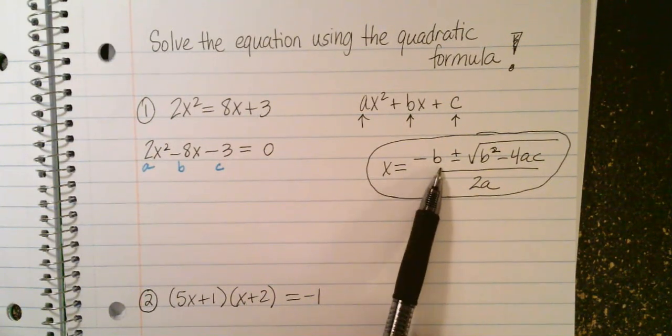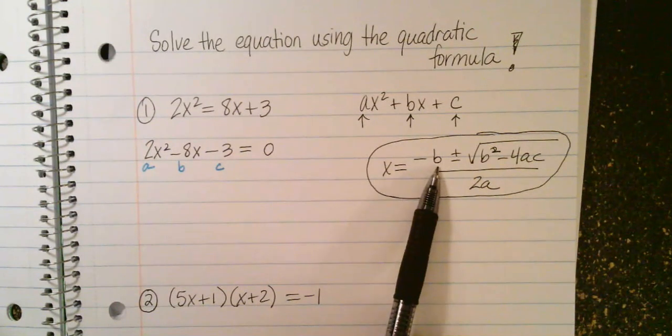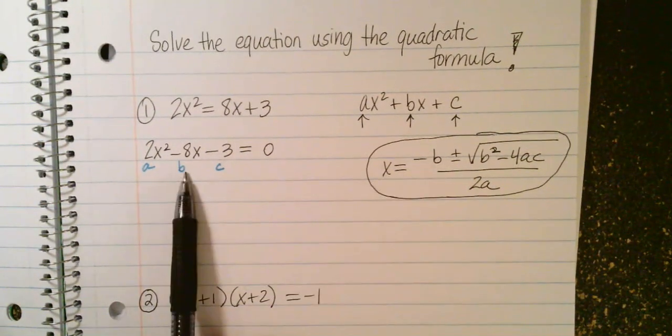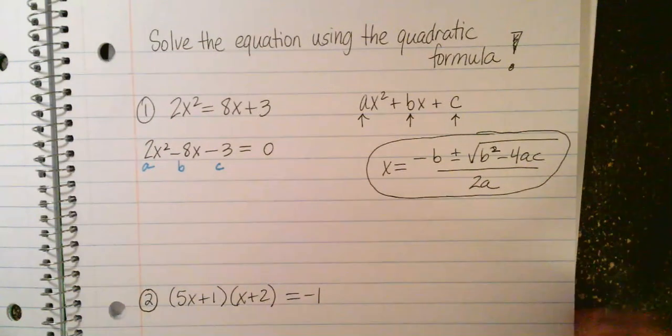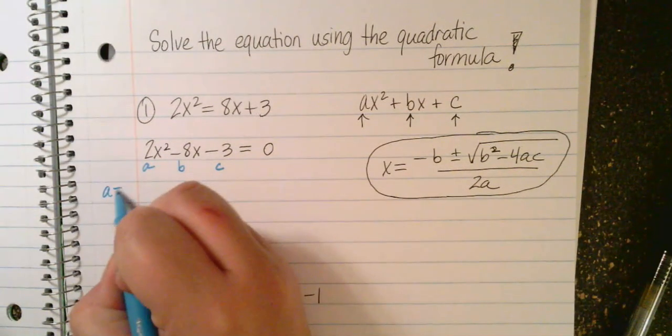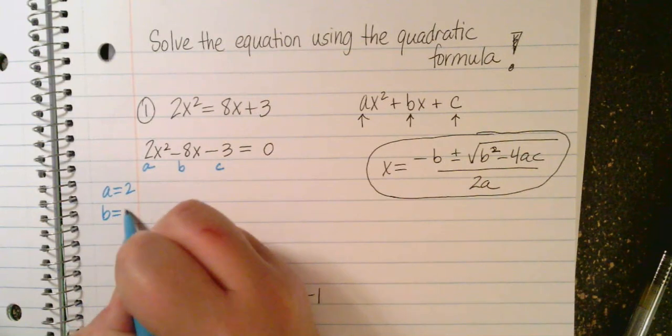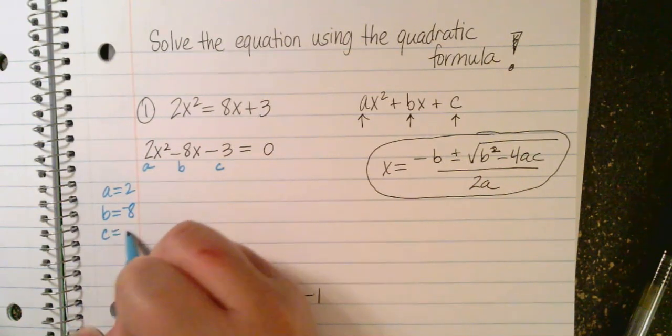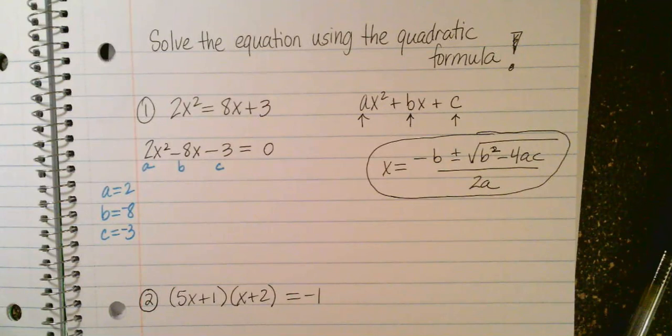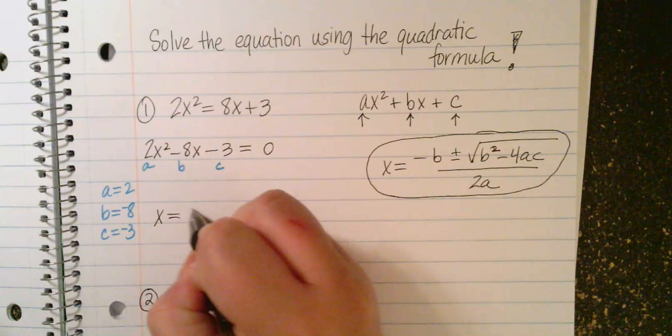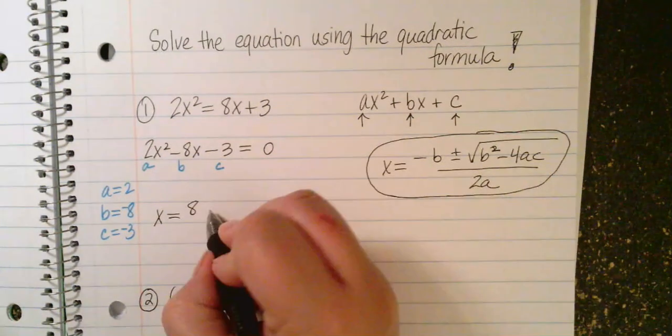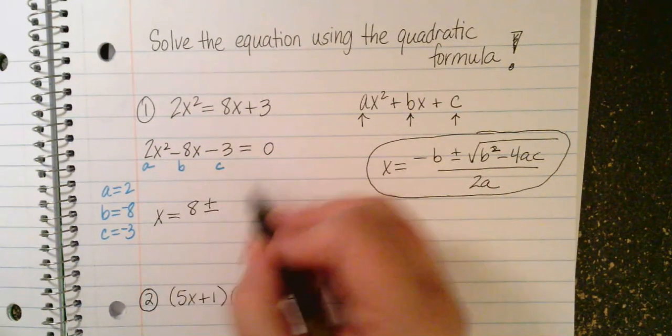A couple of things to be careful of. This says the opposite of B. It doesn't mean that it's going to be negative. It means it's going to be the opposite of whatever B is. My B here is already negative. My B is negative 8. So when I do the opposite of B, I'm going to write positive 8. Let me go ahead and write along the side here. A is 2. B is negative 8. And C is negative 3. So when I plug in and do the opposite of B, that's going to be a positive 8 out in front. Then I write plus or minus. And then square root.